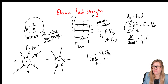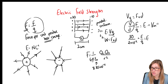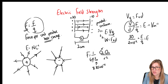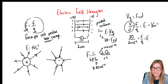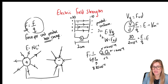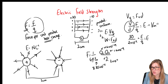Epsilon naught is a constant on your formula sheet: 8.85 × 10⁻¹². For the charges, be careful — a +1 relative charge is actually +1.6 × 10⁻¹⁹ coulombs, and a −1 relative charge is −1.6 × 10⁻¹⁹ coulombs, because they are relative charges. R is the distance between them — for example, 2 centimetres, which is 2 × 10⁻² squared.